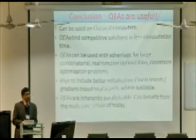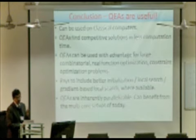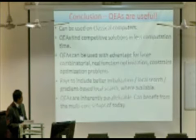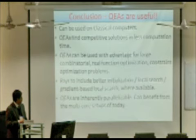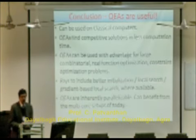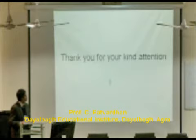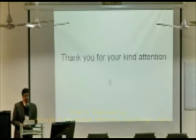So, basic conclusion is that quantum evolutionary algorithms are useful. They can be used on classical computers. They can find competitive solutions in less computation time. Can be used with advantage for large combinatorial real function, constraint optimization, variety of problems. But importantly, they can include better initialization, local search, gradient based local search, any other technique you can merge and make it faster. Also, they are inherently parallelizable. Therefore, you can benefit from the multi-core setups of today that you have. I thank you for your kind attention. Thank you.